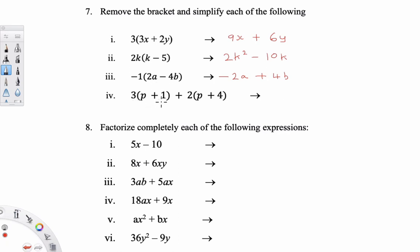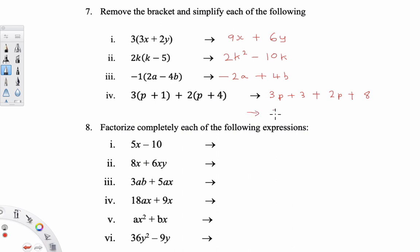For the last part of question 7, you have (3p + 1) and (2p + 4). You do one bracket at a time. The first bracket gives 3p plus 3, and the second bracket gives 2p plus 8. Then add all the like terms: 3p and 2p give 5p, and 3 plus 8 is 11. So this works out to be 5p plus 11.